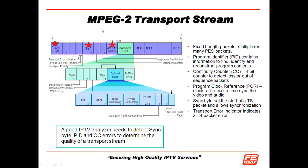If we take a look at that transport stream, it's a 188-byte packet that contains our PES packets, our packetized elementary streams. In each one of those transport streams, there is a sync byte that tells us where to find the transport stream. There's a program ID or PID that tells us what it's carrying, like HBO or Showtime. And there's a continuity counter that tells us the count of this particular transport stream so we can put these back into sequential order.